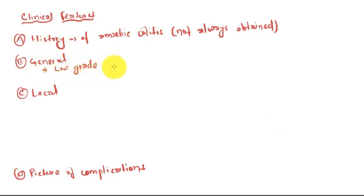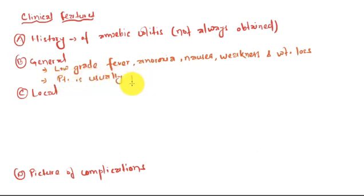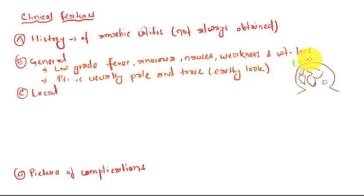Low-grade fever is present with other constitutional manifestations like anorexia, nausea, weakness and weight loss. Patient is usually pale and toxic, thus giving an earthy look. For memorization purpose, you can memorize it through this diagram which gives you the imagination of the earth, the picture of the globe in this diagrammatic representation.